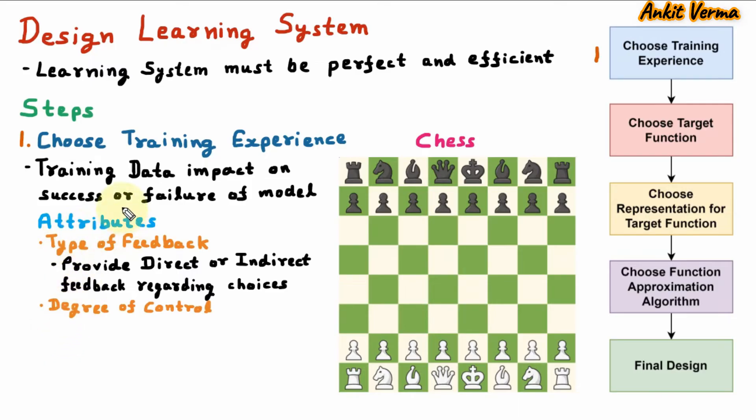Next attribute under choosing training experience is degree of control. It is degree to which learner will control training data. To understand this, we are taking the example of chess. Let us suppose that we are training the chess algorithm.